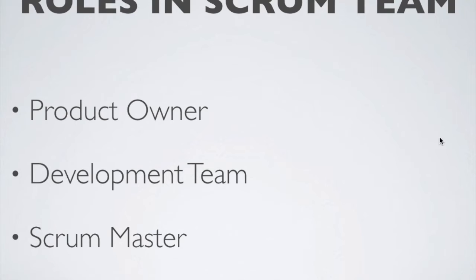The Product Owner is the sole person responsible for managing the product backlog — what is supposed to be delivered as part of the solution or software. The Product Owner keeps track of all requirements in terms of user stories and is solely responsible for managing the whole backlog.